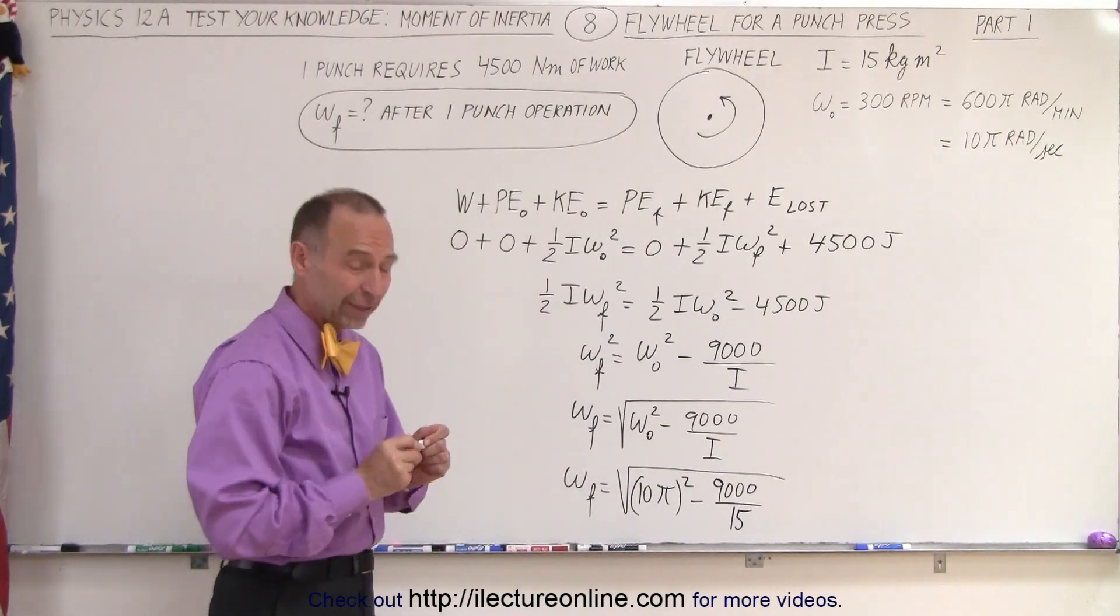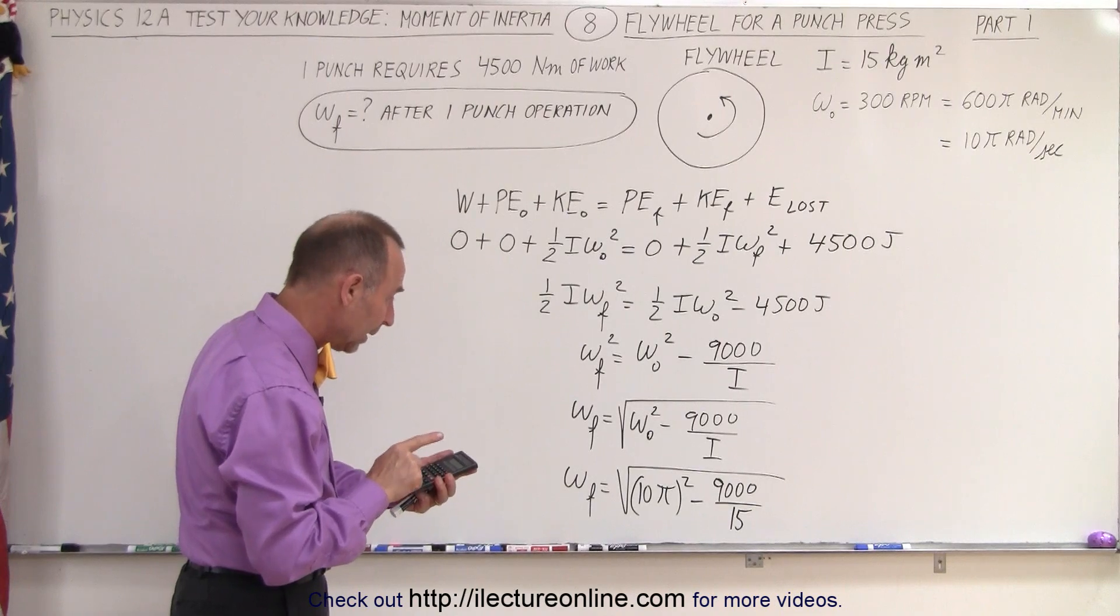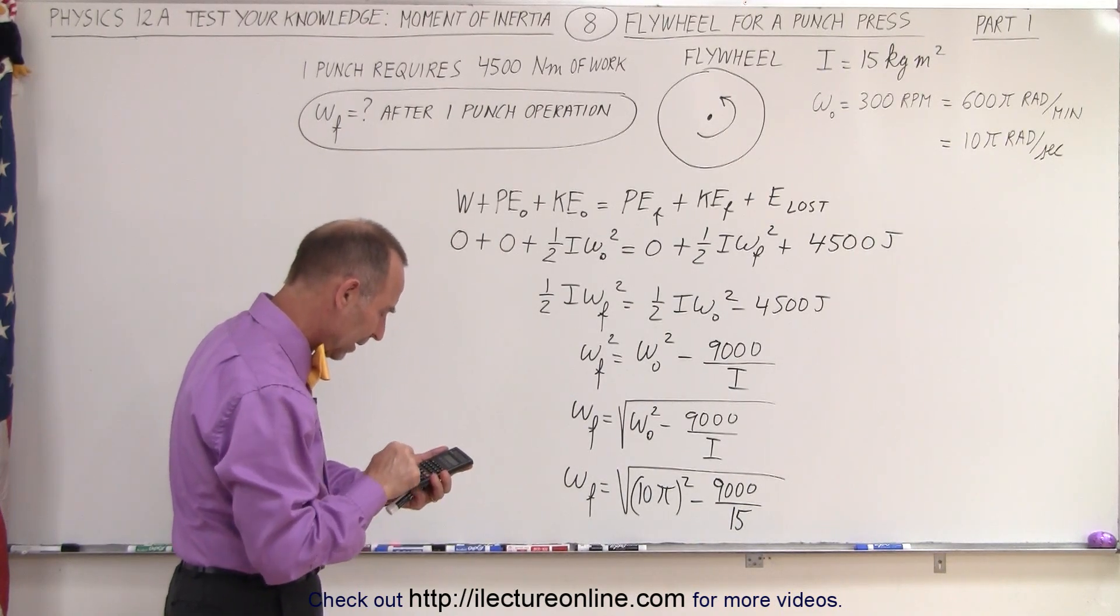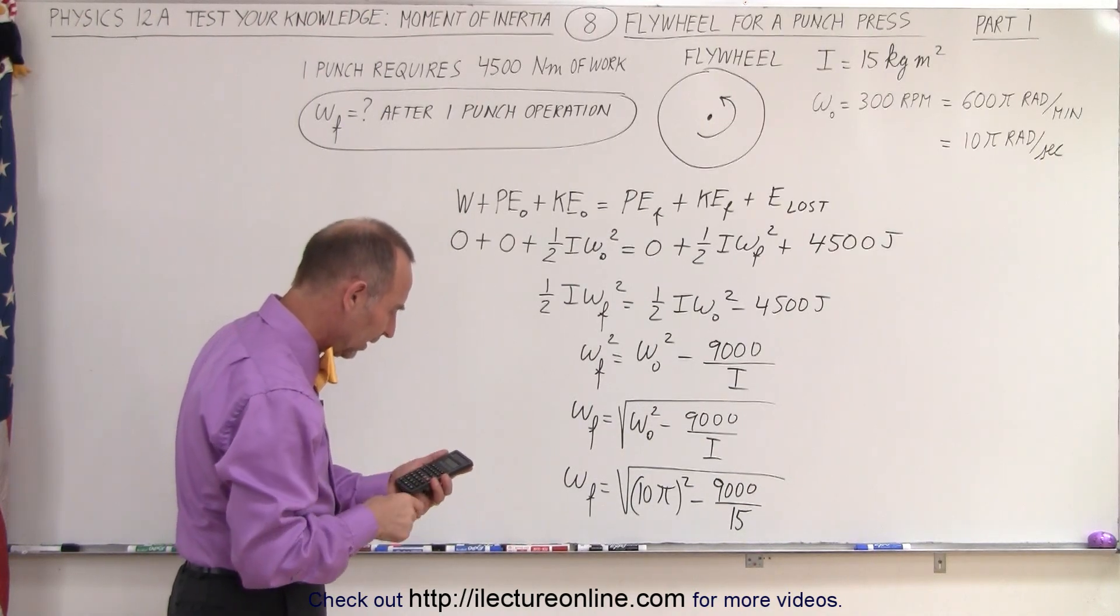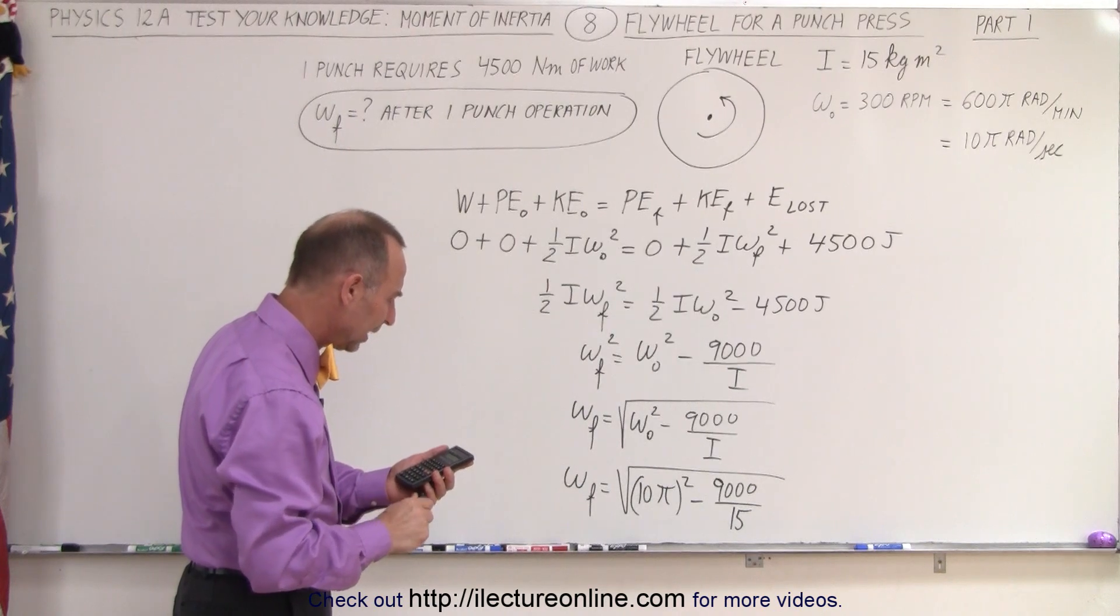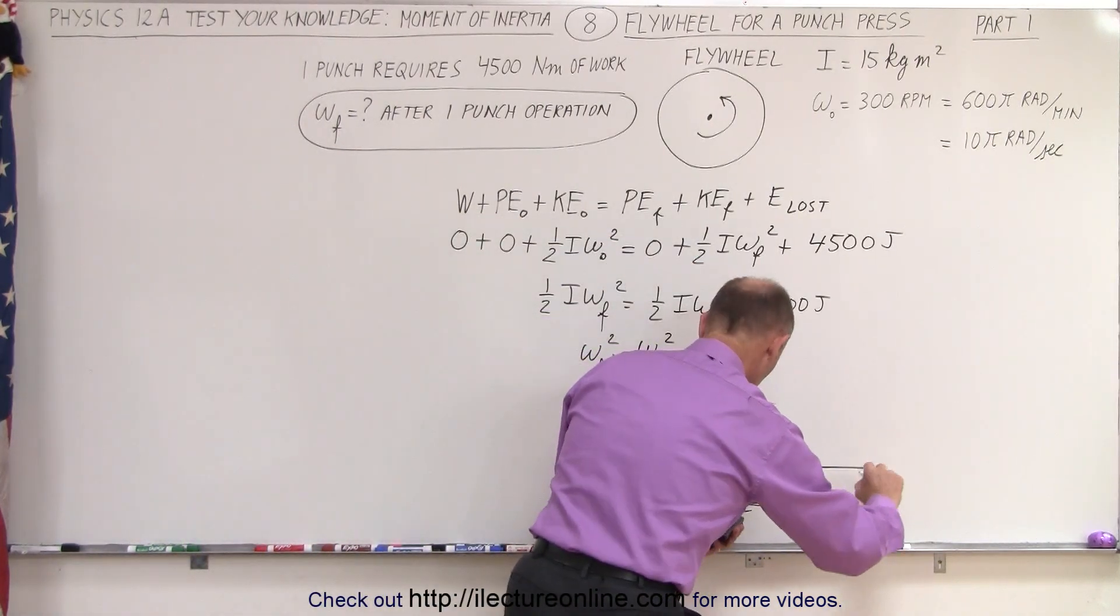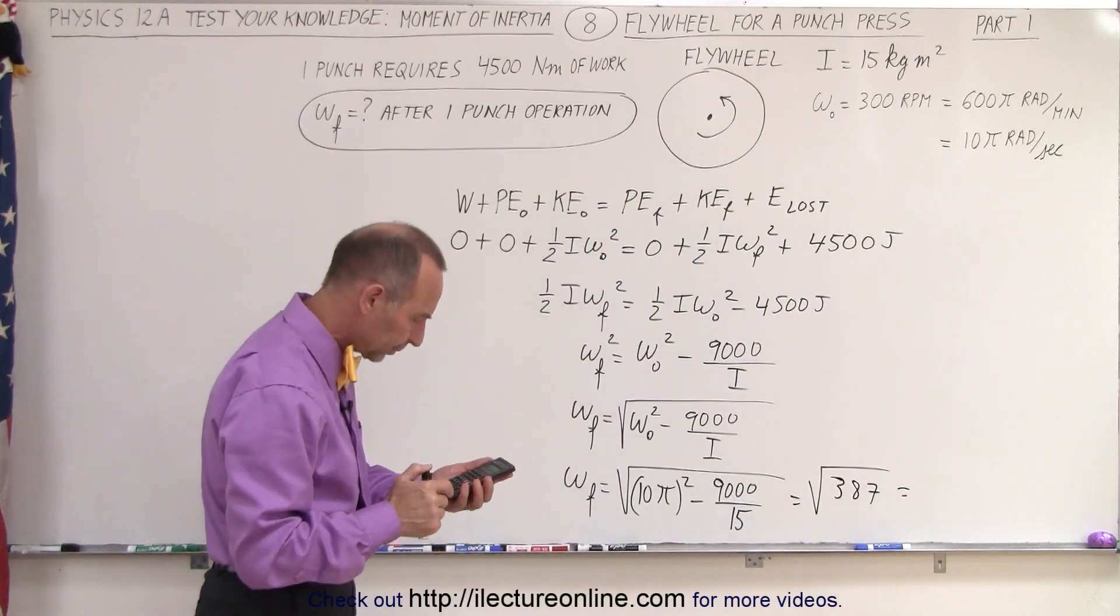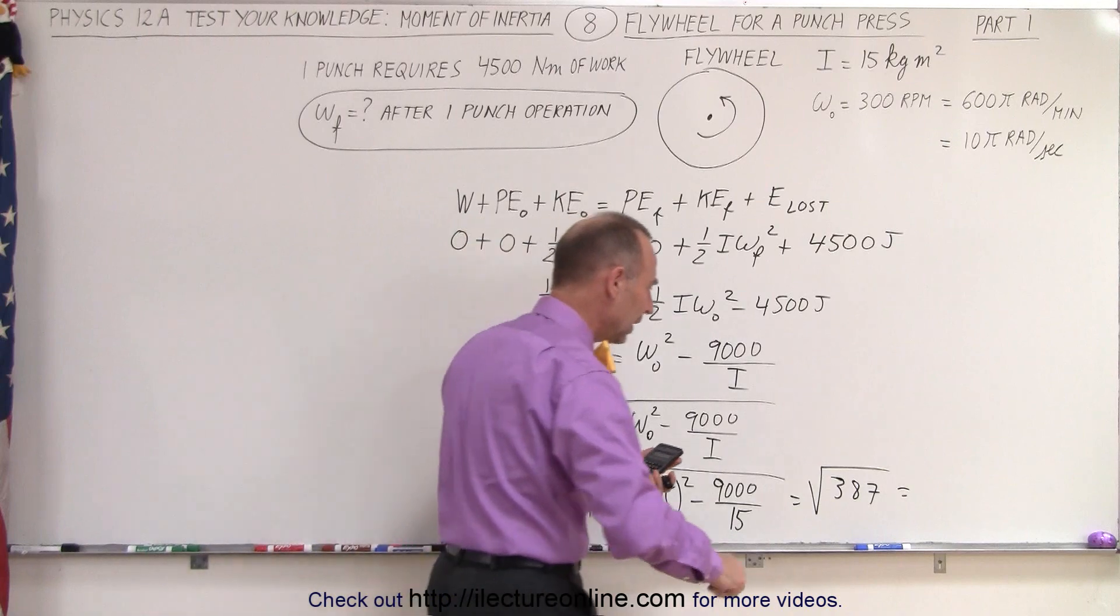All right, let's see what that is equal to. 10 times π. Now we're going to square that, and we're going to subtract from that 9,000 divided by 15, which is 600. And so we get 386.96. That's basically the square root of 387. So let's see what that is equal to. So take the square root of that. That's 19.67 radians per second.